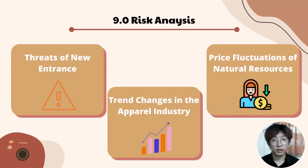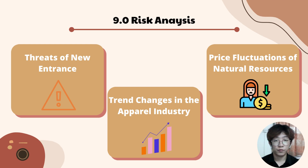We have analyzed several risks our company may encounter. First, threats of new entrants: since StitchLab is a freshly founded business, buyers may initially find it difficult to trust us. Second, trend changes in the apparel industry: due to customer interests, industry needs, and other considerations, apparel trends — especially in fashion — are always changing. Third, price fluctuations of natural resources: natural resource prices are uncertain globally due to a variety of reasons including climate change, public interest, and commercial demands, which will impact the quantity and quality of products' raw ingredients.